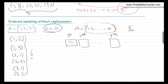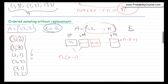When I pick one element, I'm not going to be able to choose that element again — so instead of (1,1), it has to be (1,2) or (1,3). So for the second element I have n minus 1 options. For the third element I have n minus 2 options, because I cannot choose those two anymore. And finally the last one will have n minus k plus 1 options. So the total number of ways, by the multiplication principle, is n times (n−1) times (n−2) up to (n−k+1).